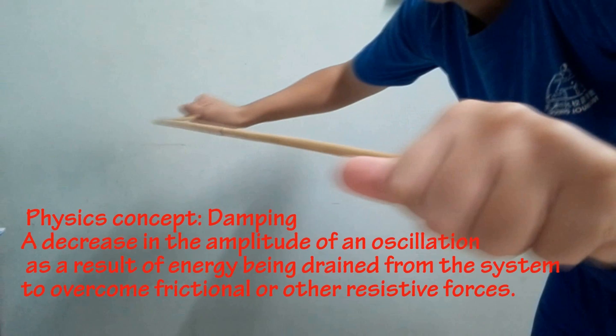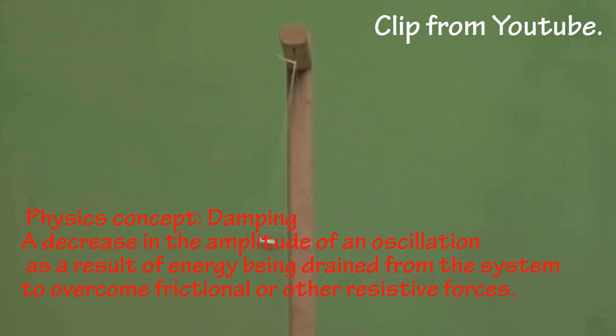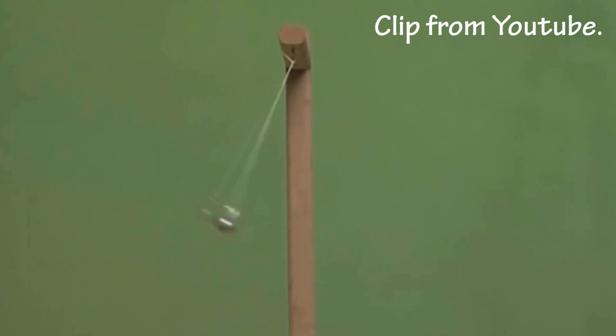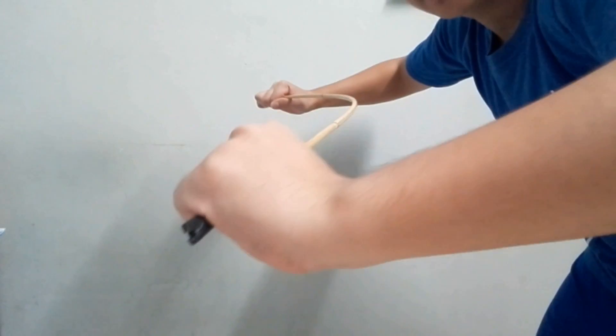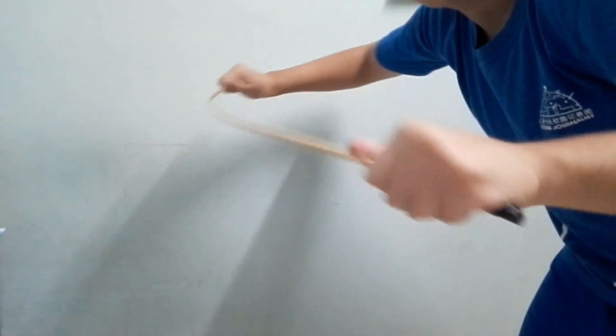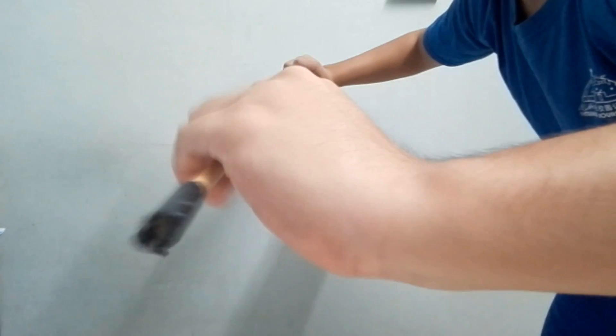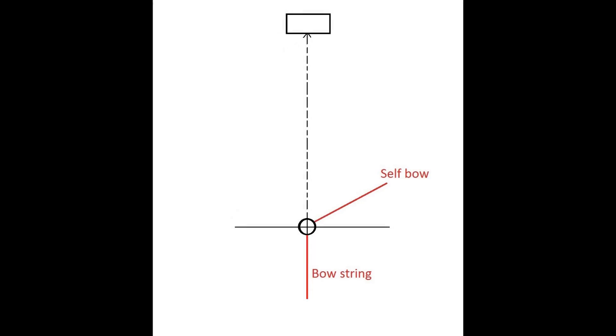During the process, the flexing of the arrow experiences a decrease in amplitude due to energy loss to the surrounding. Just like how a pendulum swing gets lower each time and eventually stops, damping occurs while the arrow is flexing and the flexing eventually stops, allowing the arrow to fly straight towards the target.